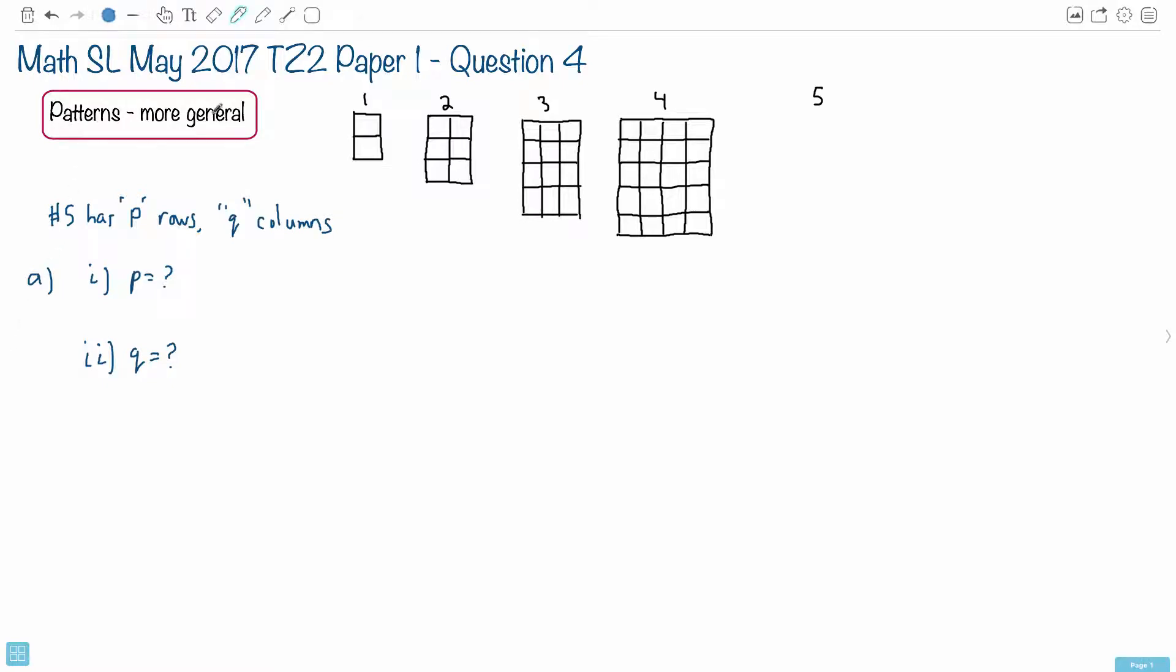This question is about more general patterns. They give you some diagrams here and they talk about the rows and the columns. So just to make sure we're clear here, what do we mean by rows and columns?